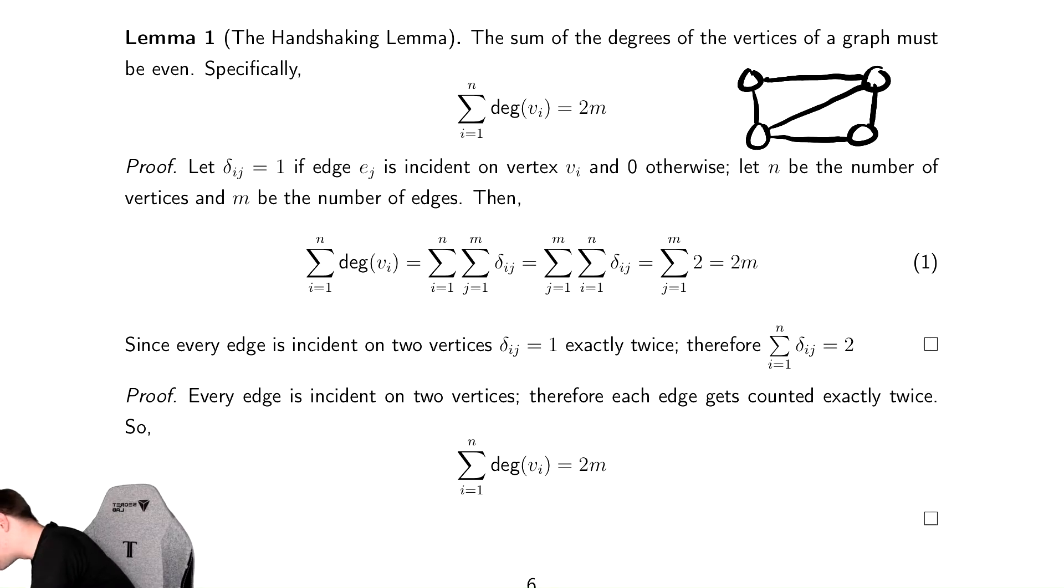And write down the degree of each vertex. Top left has two, top right has three, bottom right has two, bottom left has three. And if we add up the degrees, we get two plus three plus two plus three, we get ten, which is even. Cool.